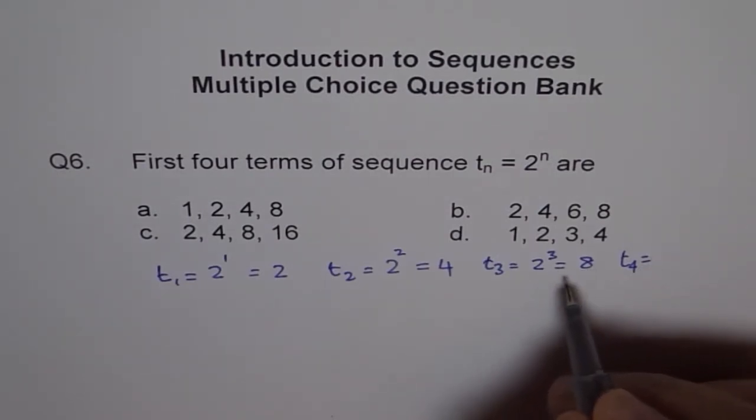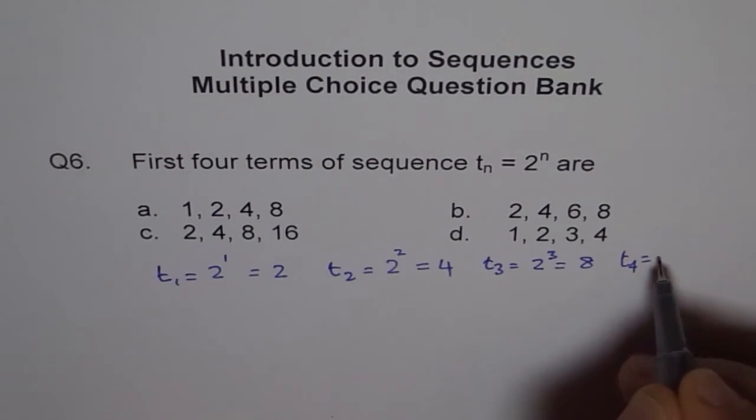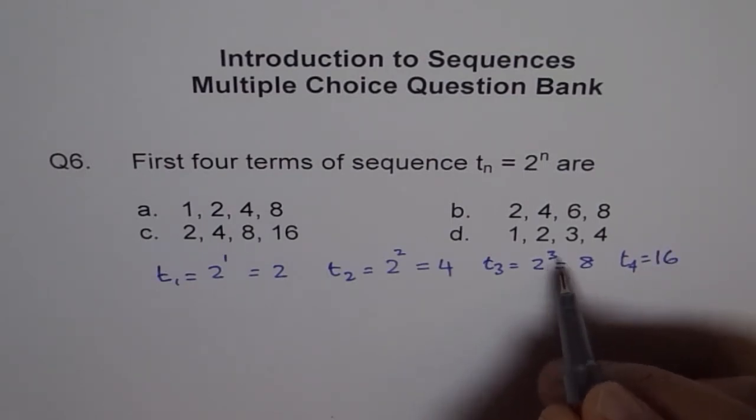So you can multiply the previous term to get the next term, 2 times 8, 16, 2 to the power of 4, correct.